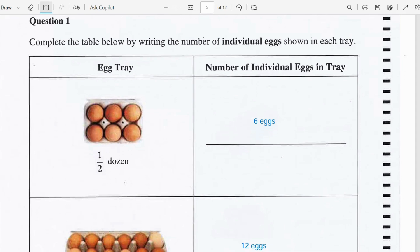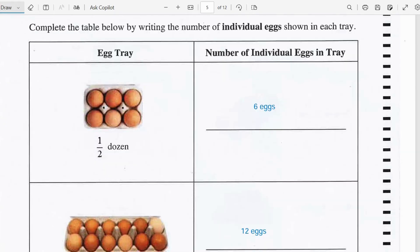So the egg tray has half dozen eggs and we can count them and see that the number of individual eggs in the tray is 1, 2, 3, 4, 5 and 6. So that's 6 eggs.